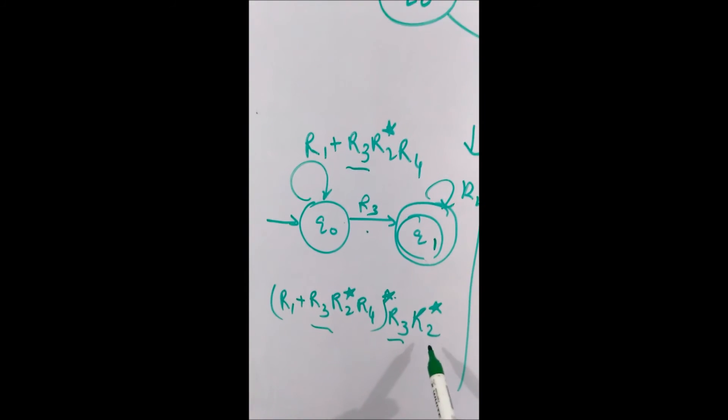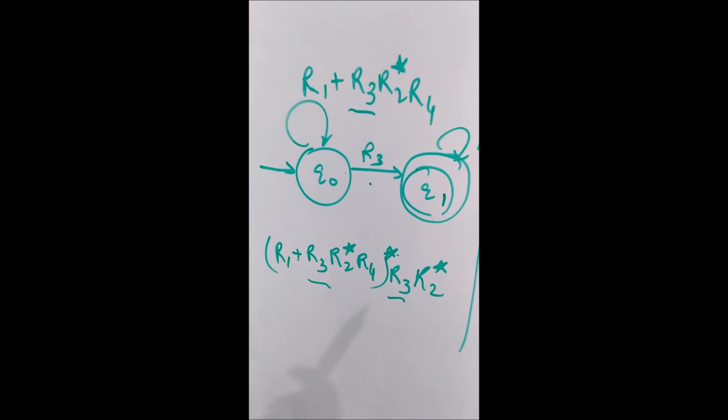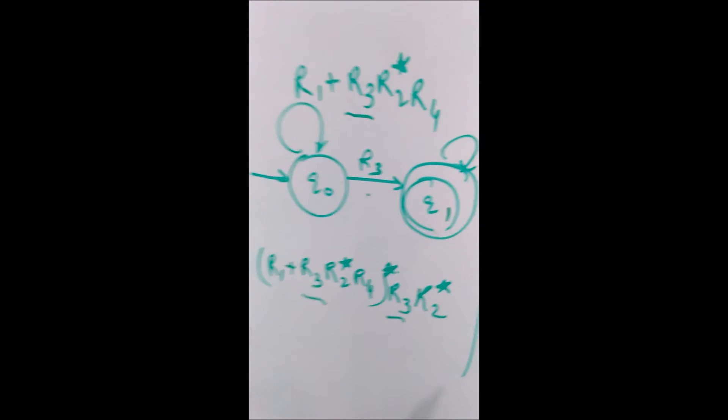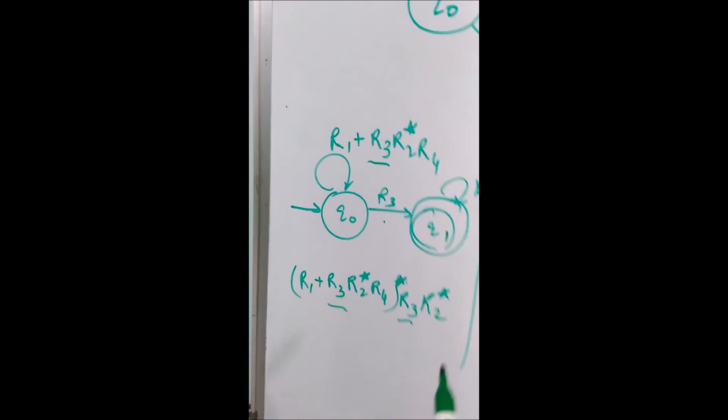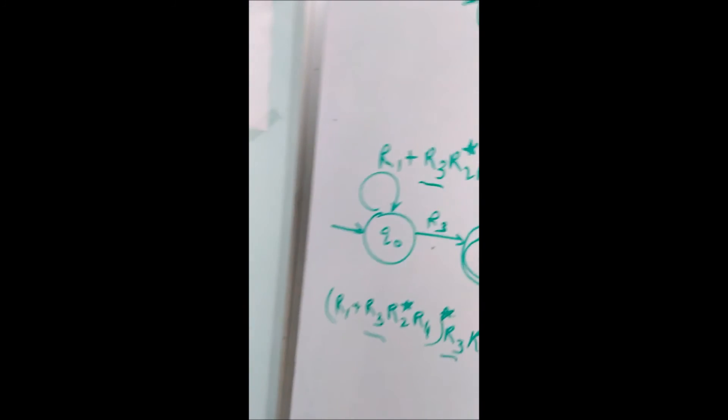Then the next input will be r3 which is here and then after this it will go to a self loop which is r2. r2 star can occur more than 0 times. This is the regular expression if you transfer the loop to the first state.